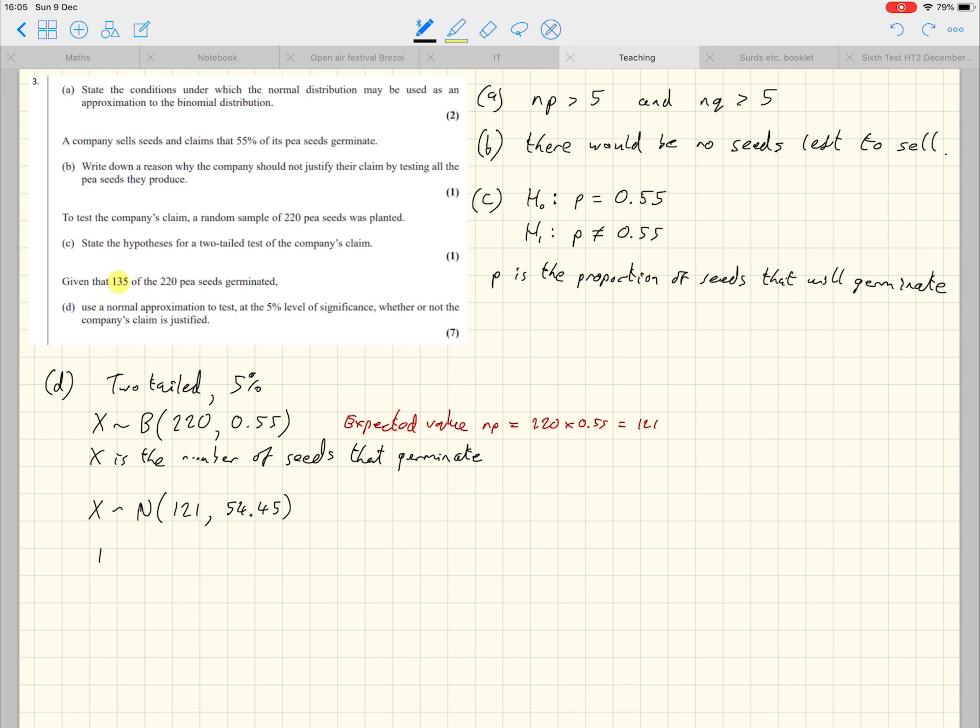Now, the same probability that we were trying to work out before, is for X greater than or equal to 135. This time, we can just do by reaching for the ClassWiz. Now, it would be normal CD with lower bound 135, upper bound 9999, something very, very big would be fine. The mu and sigma we can get from here, but just be really careful to type in that sigma would be the square root of 54.45.